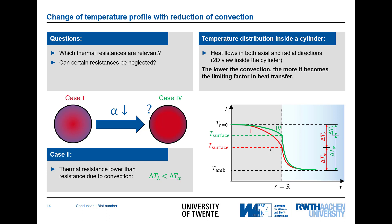In case four we increase the heat transfer coefficient on the outside, so the external thermal resistance decreases — wait, actually the convective resistance increases when alpha is reduced. Changing the heat transfer coefficient on the outside alters the external thermal resistance, and again the ratio between the temperature drop inside the body and outside the body changes. We have now seen three quantities — thermal conductivity, characteristic length, and heat transfer coefficient — that all affect this ratio and can be combined into one dimensionless number.